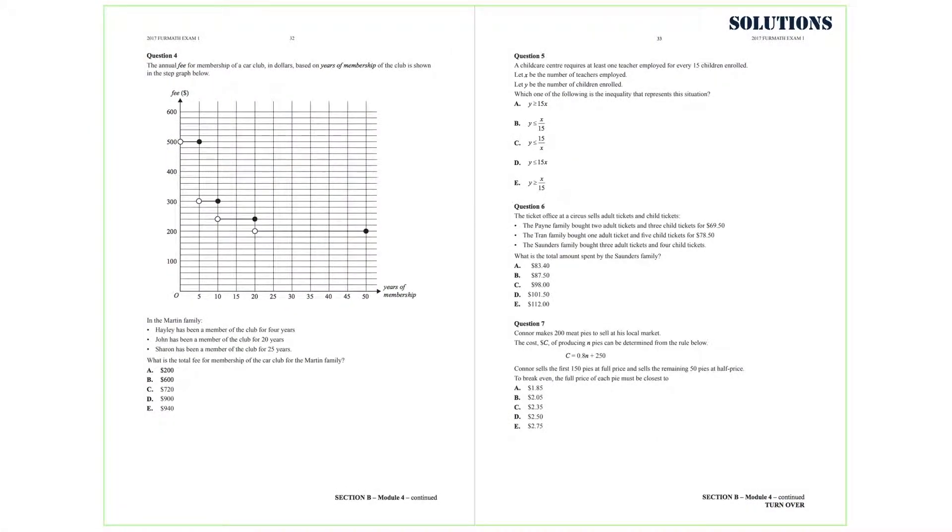The annual fee for membership of a car club in dollars based on years of membership of the club is shown in the step graph below. So, in the Martin family, Haley has been a member of the club for 4 years. John has been a member of the club for 20 years, while Sharon has been a member of the club for 25 years.